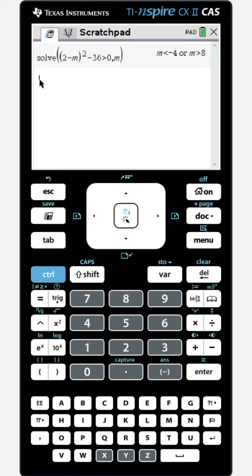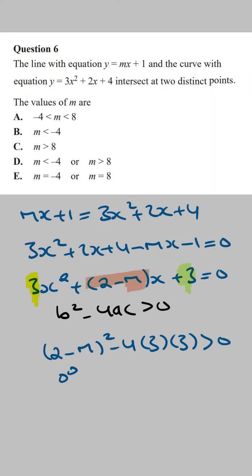We're going to get m is less than minus 4 or m is larger than 8. And so the values of m that satisfy this inequality is m is less than minus 4 or m is larger than 8, giving us the answer, option D, for this question.